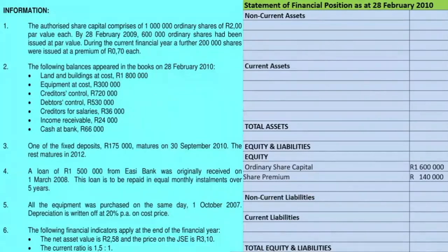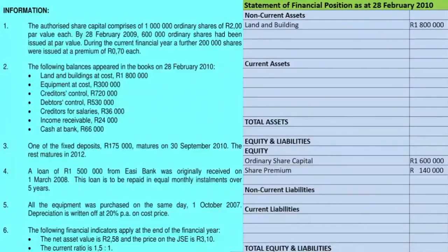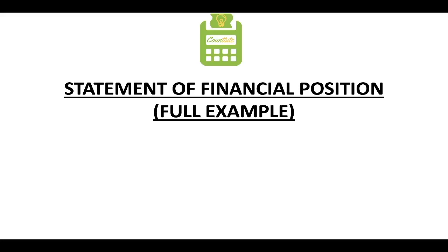Let's move on to number two. We are told that the following balances appeared in the books on 28 February 2010, which is the end of the period for our statement of financial position. We are given land and buildings at cost: 1.8 million rand. Land and buildings is a non-current asset, so we record it under the non-current assets section at 1.8 million rand. We are also told that equipment at cost is 300,000 rand, which is also a non-current asset, so we record it at cost: 300,000 rand.